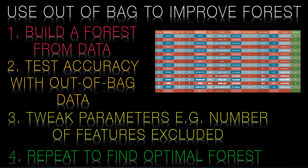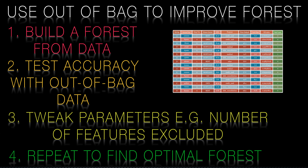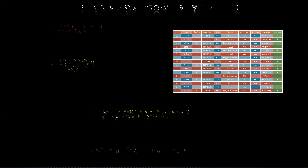We can then build another forest — this time perhaps using more than the square root of the number of features for each split, as we see here. Once again we can use the out-of-bag samples to determine the accuracy of this forest. Repeating this a bunch of times with different numbers of features excluded allows us to further fine-tune and optimize our random forest model.